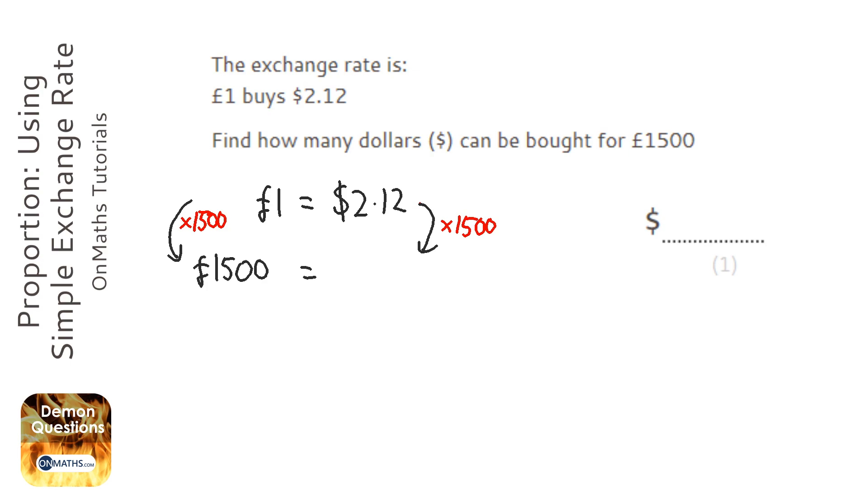Get my calculator out and 2.12 times £1,500, and it gives me the answer of $3,180. So, my answer is $3,180.